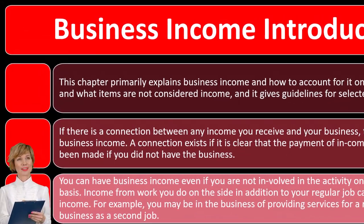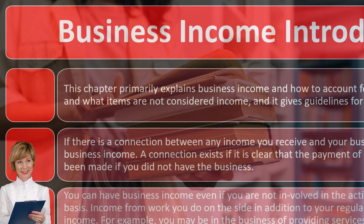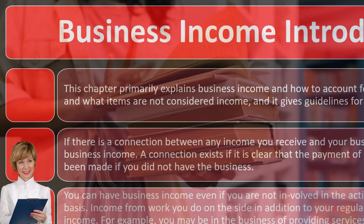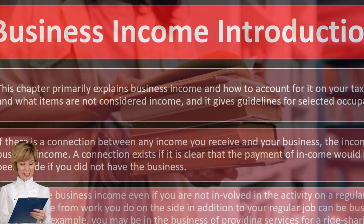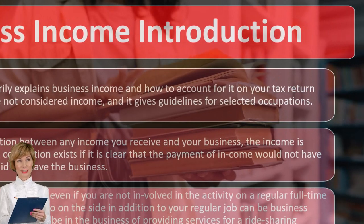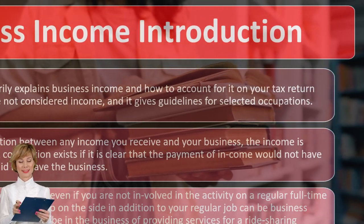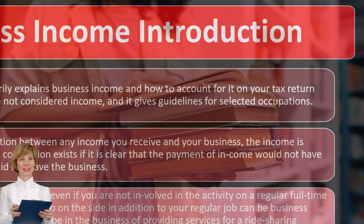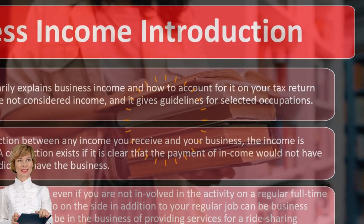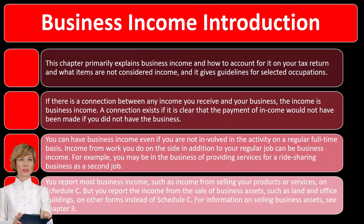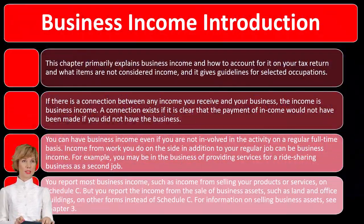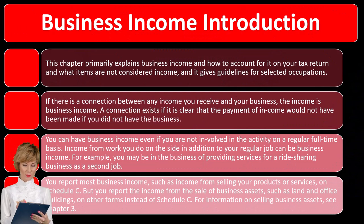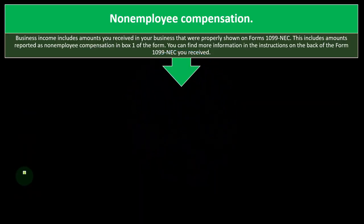If you had something on the books that you had to capitalize and record depreciation on, and then you sold that equipment, for example, you might have to report it on other forms to record the gain or loss for those particular sales, as seen in prior presentations. For information on selling business assets, see Chapter 3.